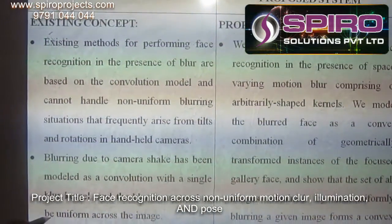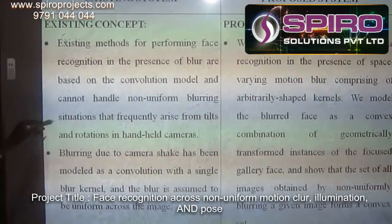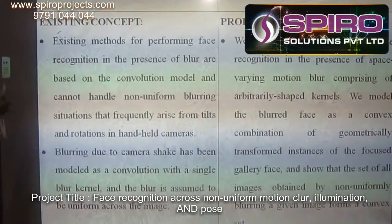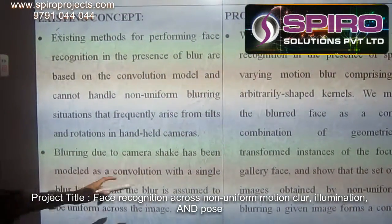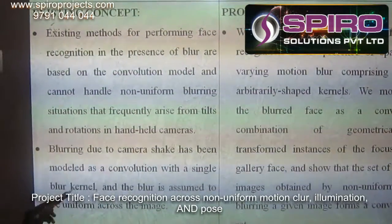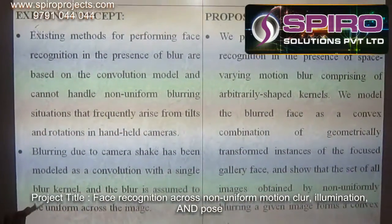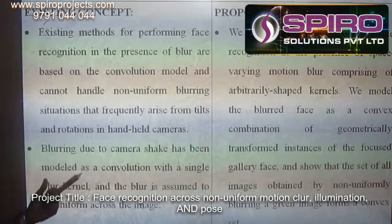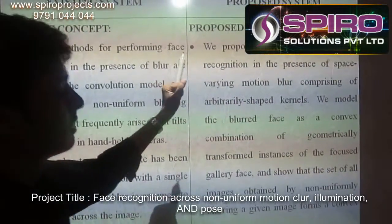In the case of non-uniform blurring, if the image is moving continuously it cannot identify the image. The blurring is caused mainly due to camera shake while taking the image, and the model uses convolution with a single blur kernel. Because only a single blur kernel is used, it cannot identify who is the authenticated person.